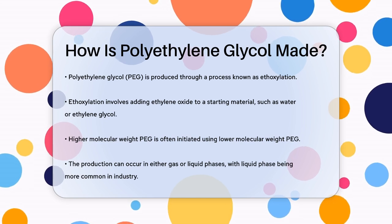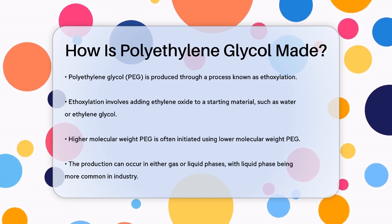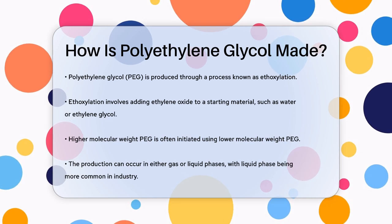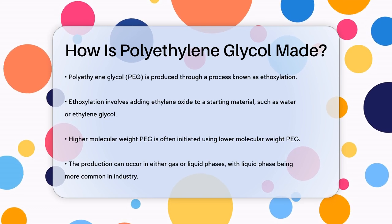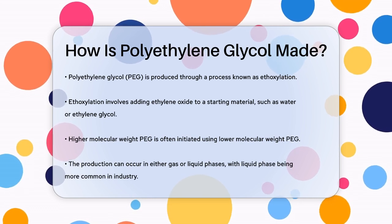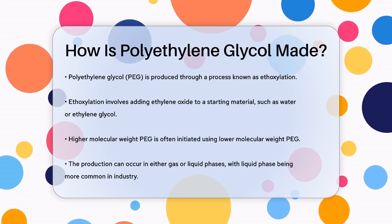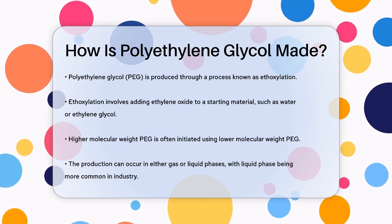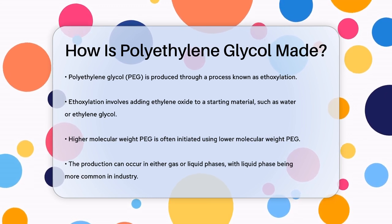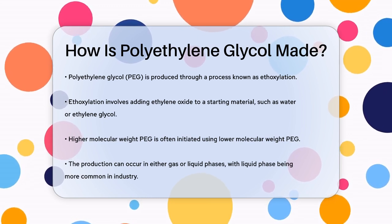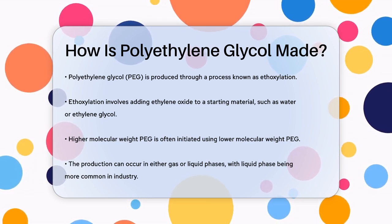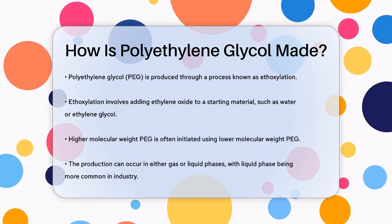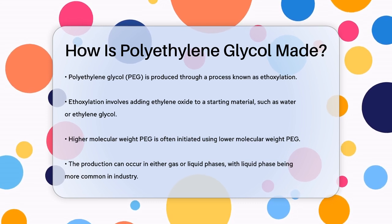Polyethylene glycol is made through a process called ethoxylation. This involves the stepwise addition of ethylene oxide to a starting material, which can be water or ethylene glycol itself. When producing PEG with a higher molecular weight, a lower molecular weight PEG is often used as the initiator.